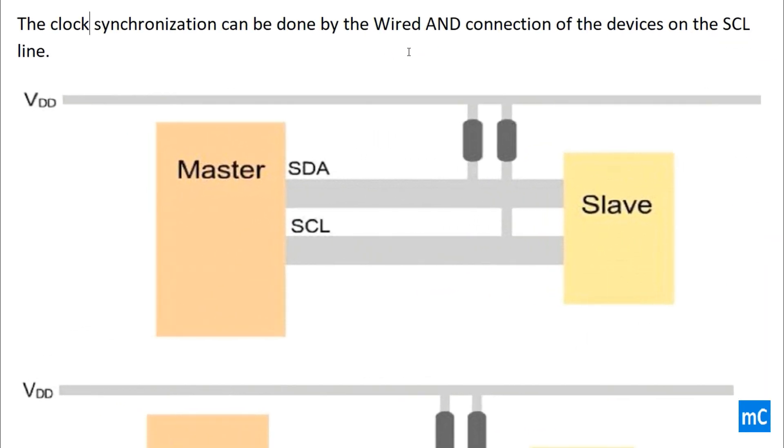The clock synchronization can be done by wired-AND connection. The default configuration of the I2C bus is wired-AND configuration. So, this helps the I2C to synchronize the clock. We will see how the wired-AND connection helps the I2C to synchronize its clock.